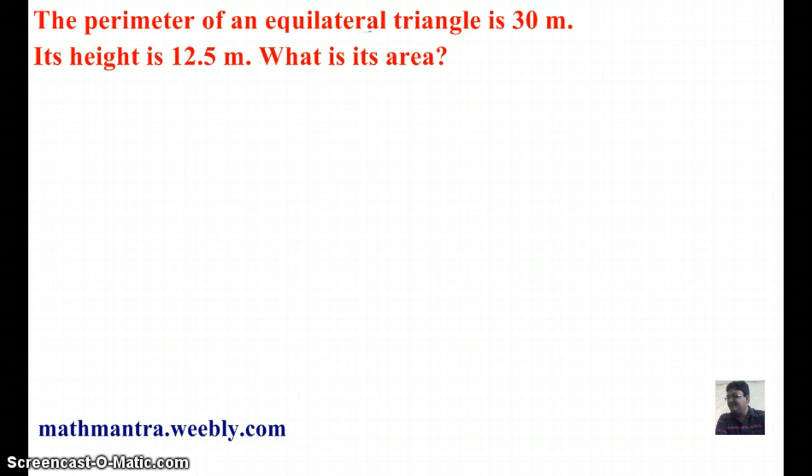Let's start by representing the question in the form of a diagram. We have an equilateral triangle here, and let's write down the data given to us, which is the perimeter of the triangle, given as 30 meters. Perimeter is 30 meters, and height is given as 12.5 meters.